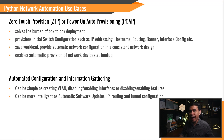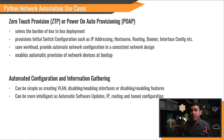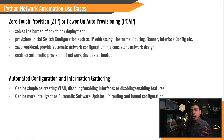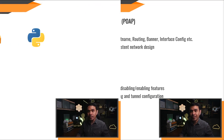Automated configuration and information gathering — it can be as simple as creating VLANs, disabling or enabling interfaces, or disabling or enabling features. It can also be more complex configuration, such as automating software updates, IP-related configuration, routing, and tunnel configuration. ZTP or POAP is best for out-of-the-box network deployment.